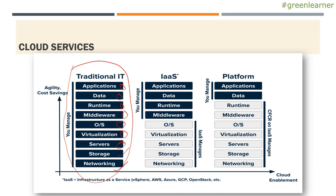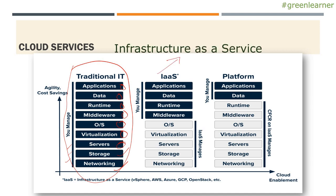Everything that was required for the application was managed by the company behind the development of the application. But as time passed, networking, storage, and servers were common requirements for every company. So they thought of isolating these things from other components, and the term came: IaaS — infrastructure as a service.